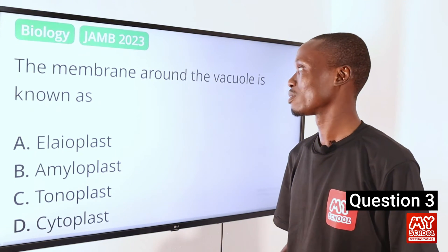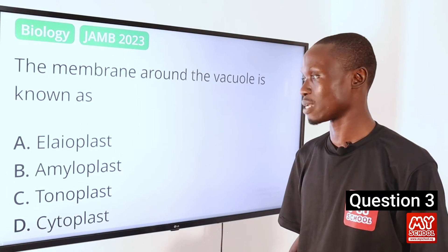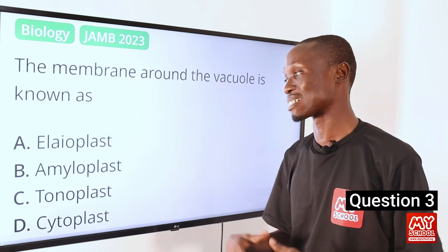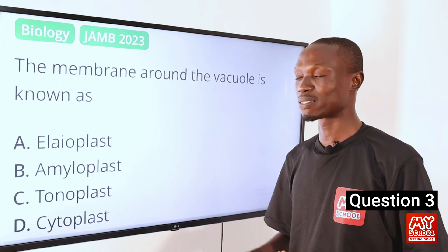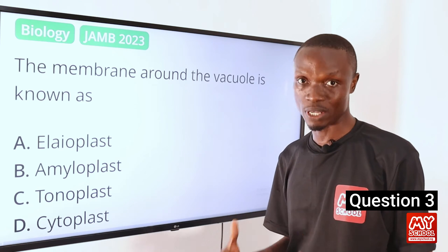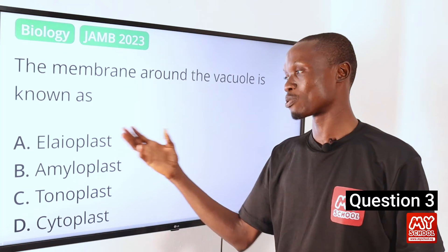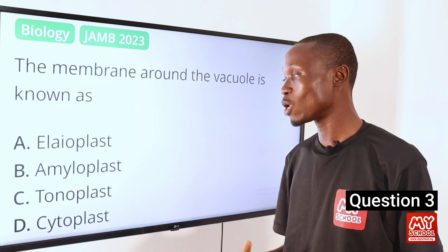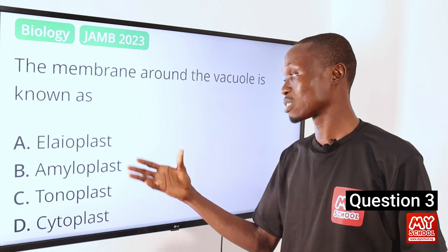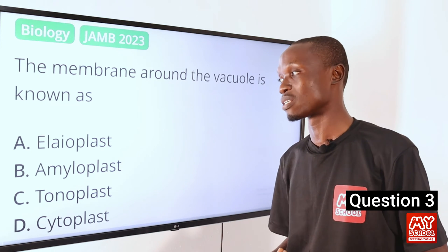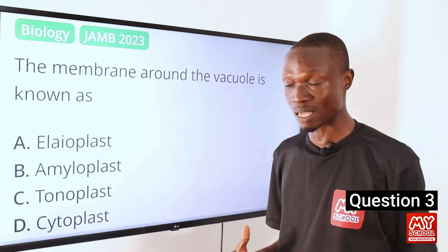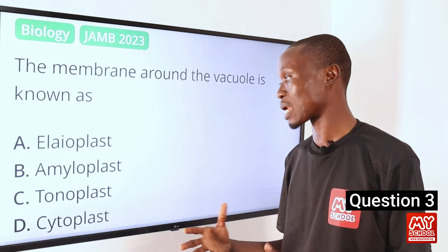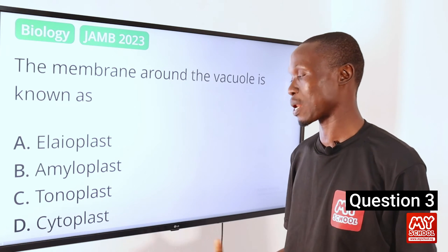Question 3. The membrane around the vacuole is known as — A, helioplast, which is a type of plastid that synthesizes and stores lipids in plant cells. B, ameloplast, also a type of plastid that primarily synthesizes and stores starch granules in plant cells. C, tonoplast.